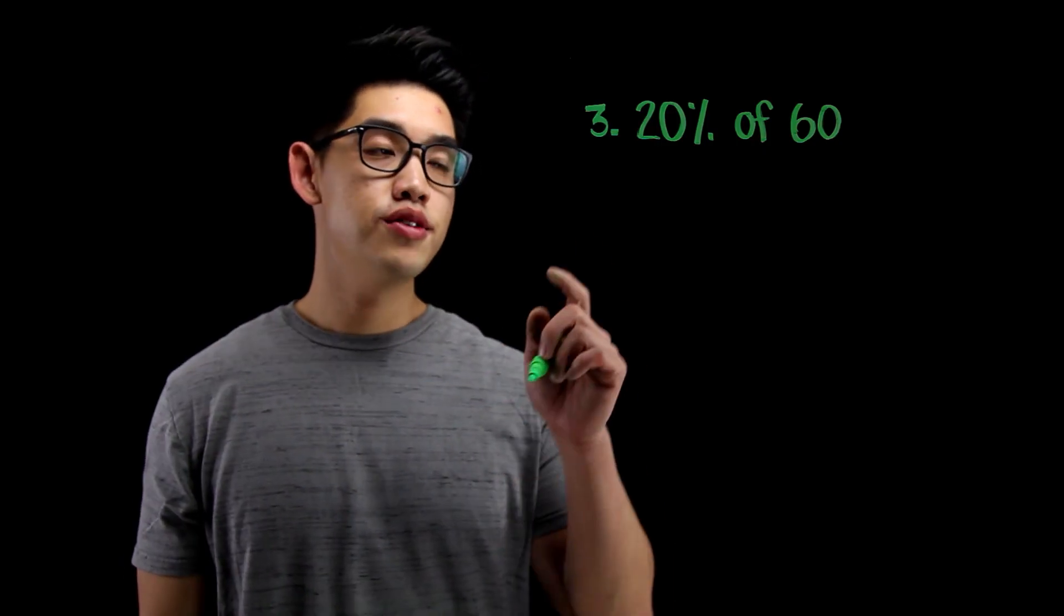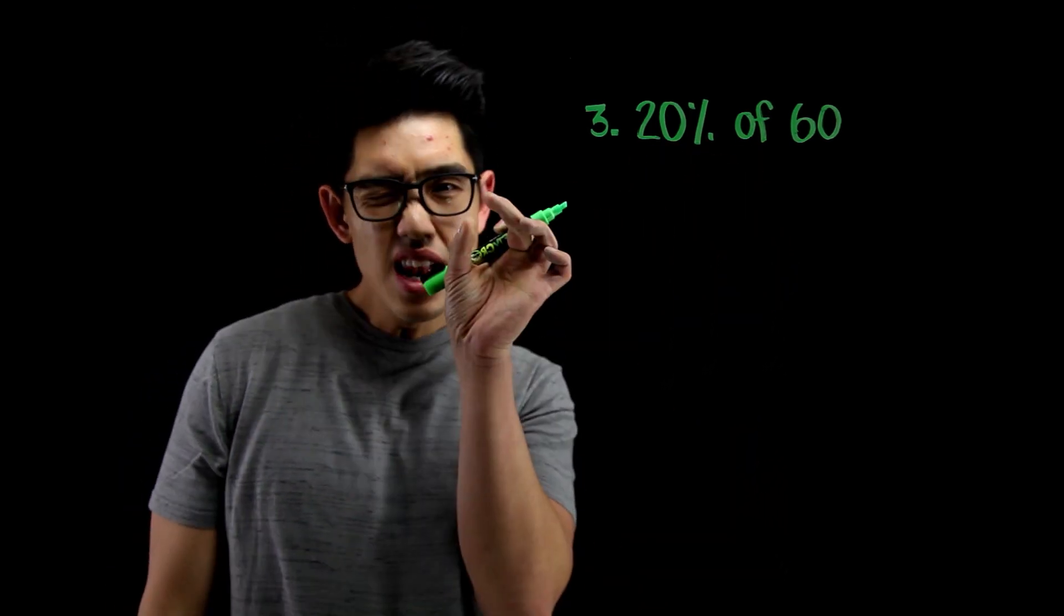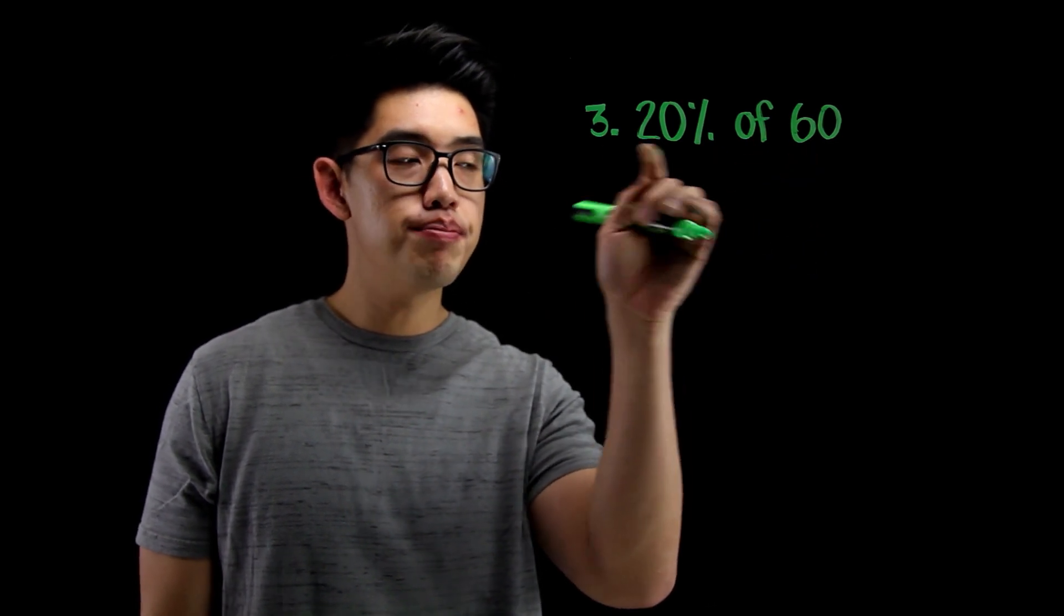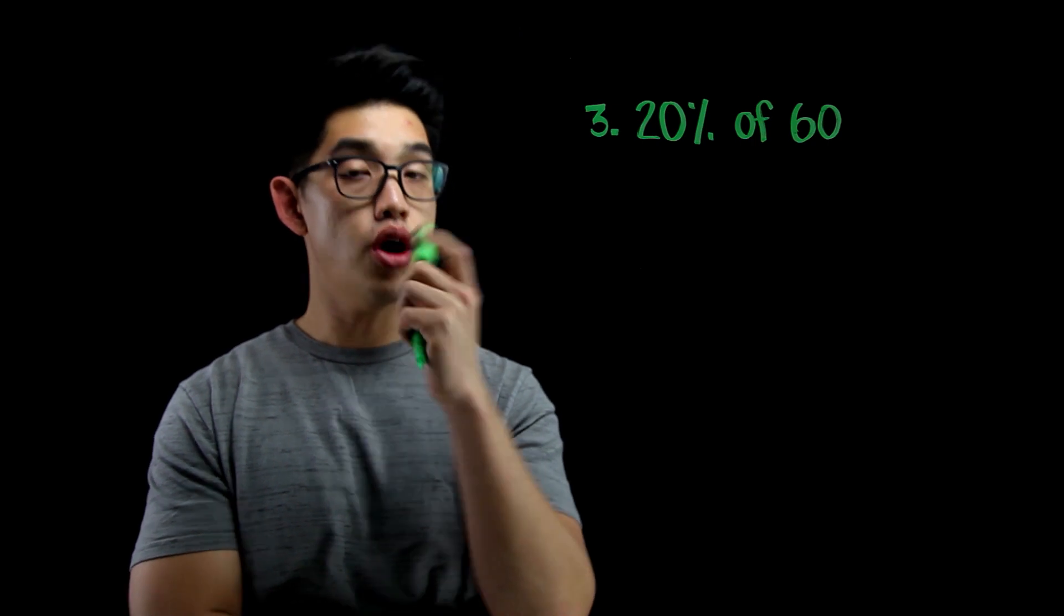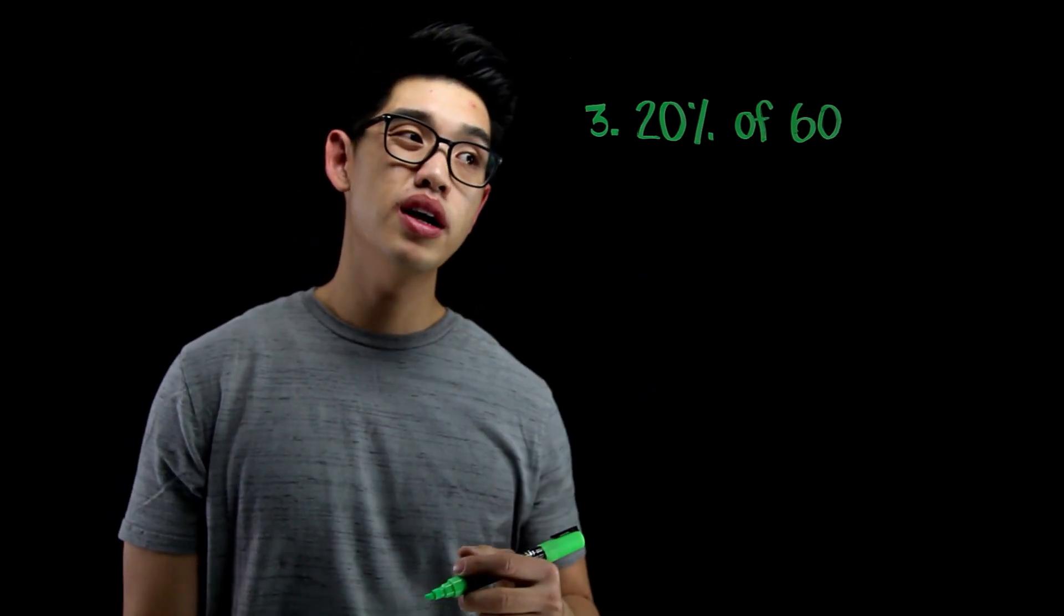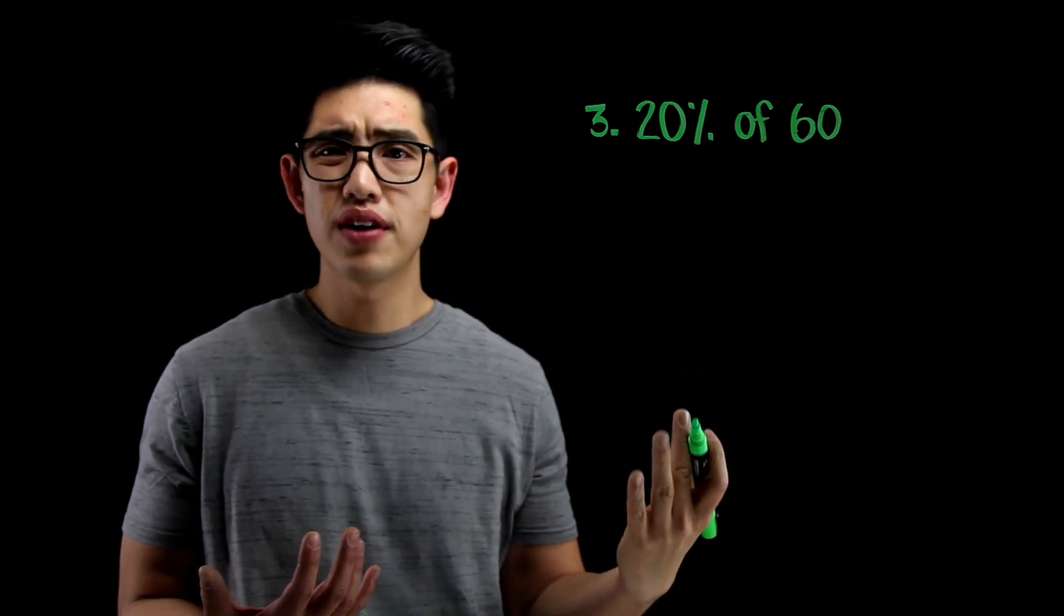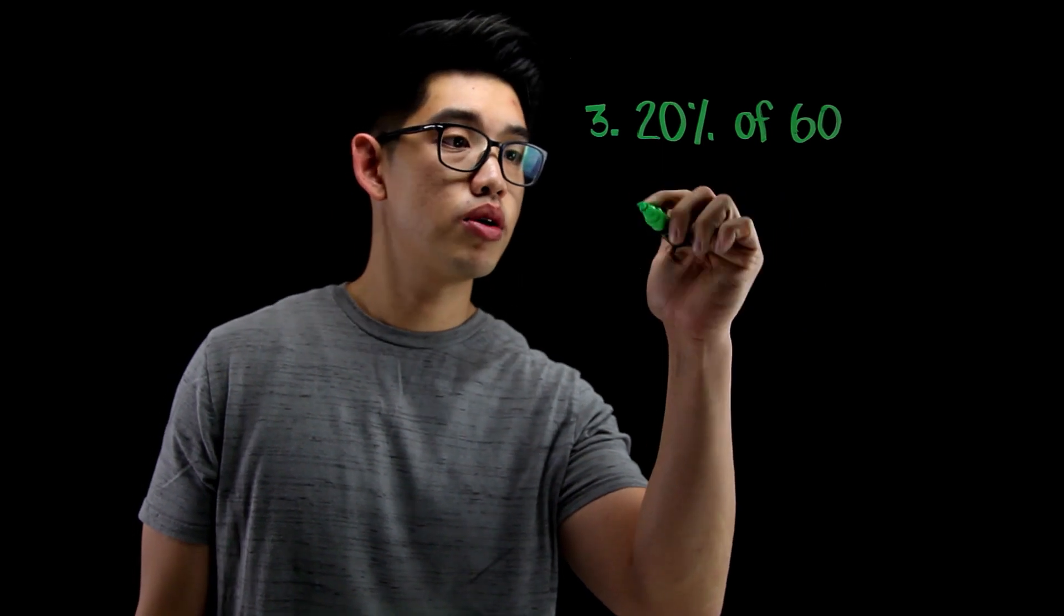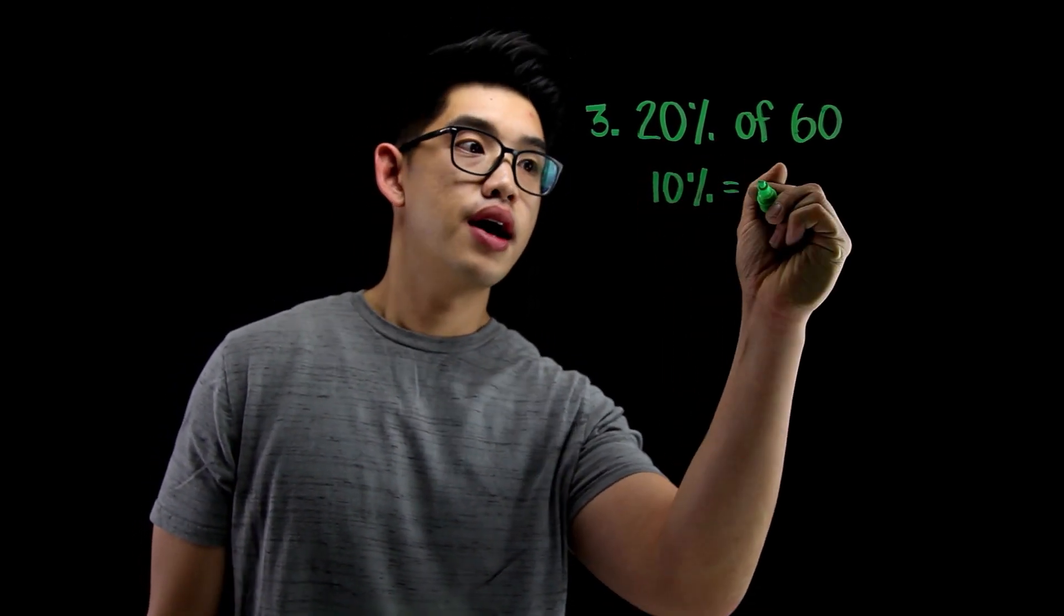For number 3, I want to find 20% of 60. I want to find a little portion, a small piece of 60. Let me do an easy method. I know that 10% of 60, because it's easy to find 10% of anything, 10% of 60 is just 6. So I'm going to write 10% is the same thing as 6. Yeah, just move the decimal to the left once.